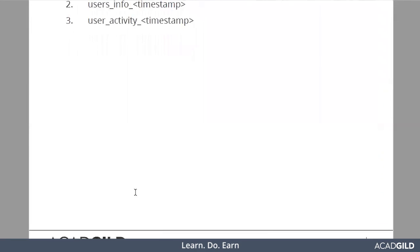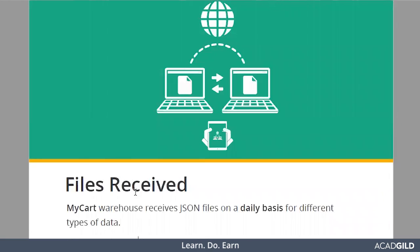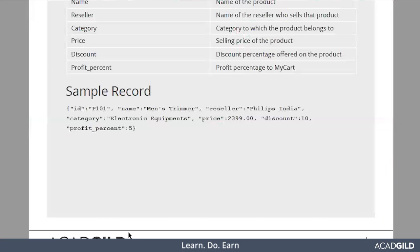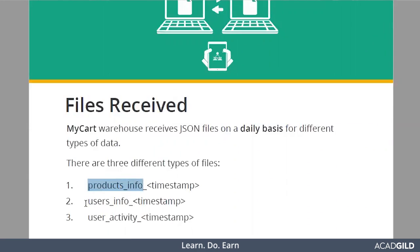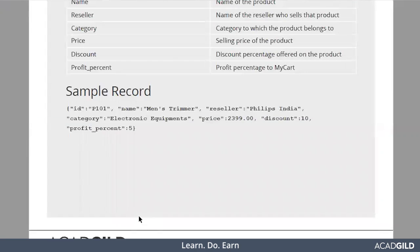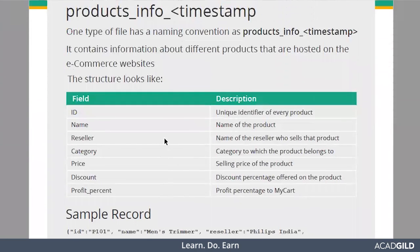There are three different data types received on a daily basis: products info, users info, and users activity. Let's see each one by one. Products info contains information about different products posted on the e-commerce website. Every unique product has a unique ID, the name of the product, the reseller — most e-commerce companies don't manufacture products themselves, they get them from a reseller and deliver to the customer — the category, price, discount, and profit percent. The sample record looks something like this.